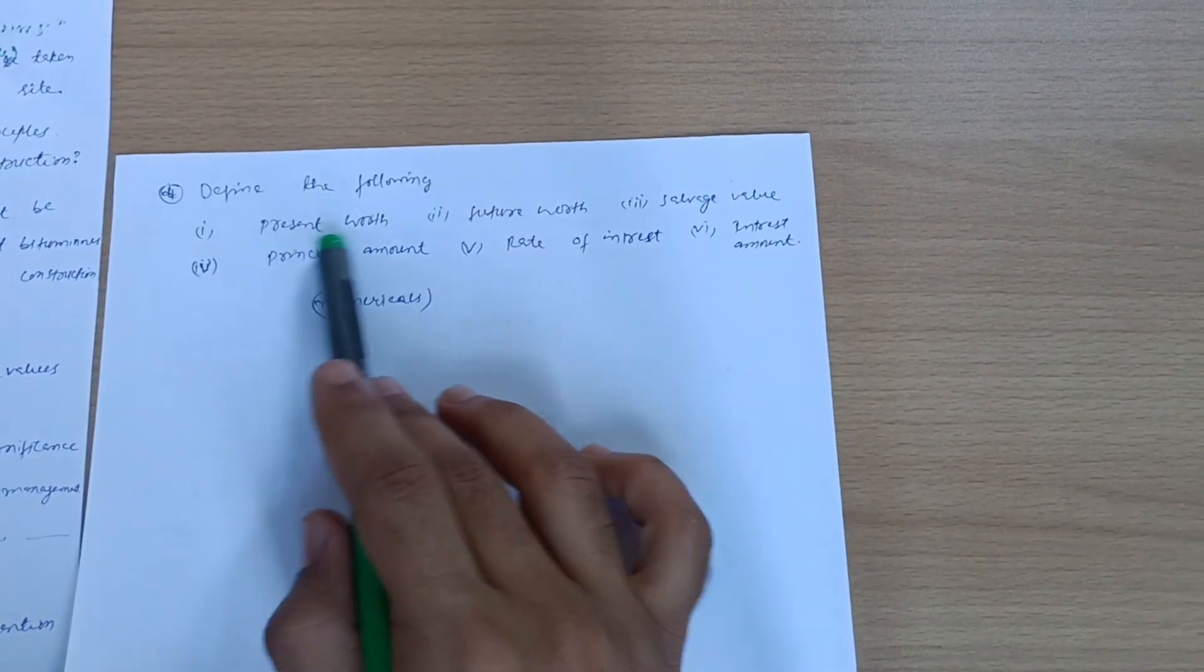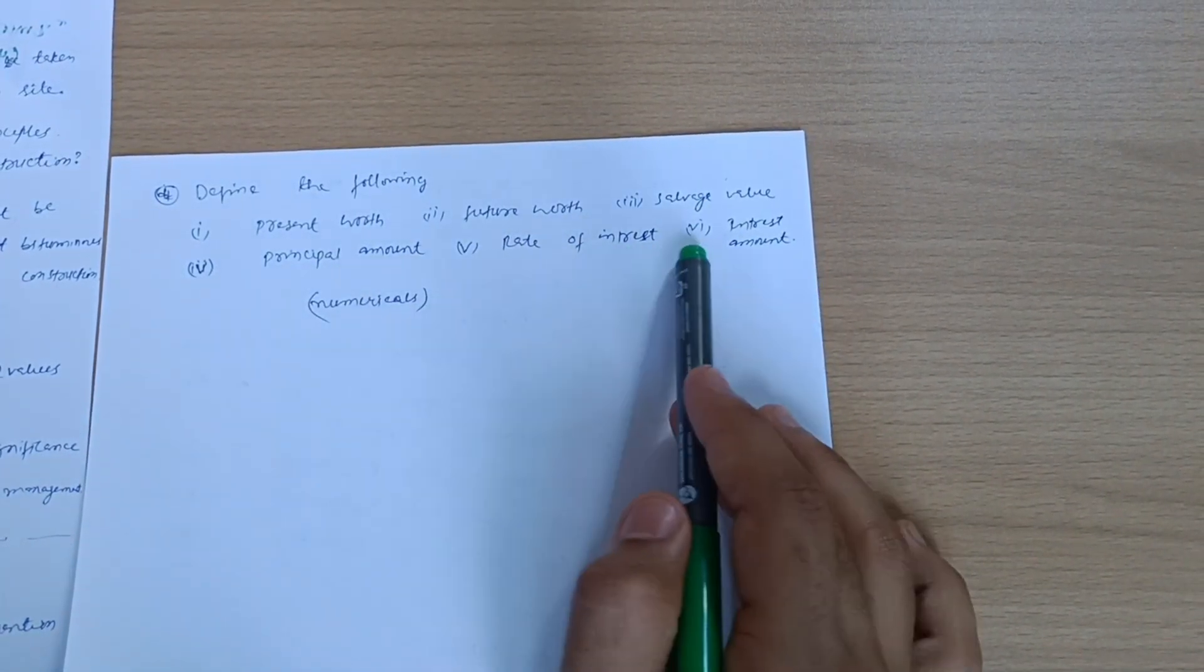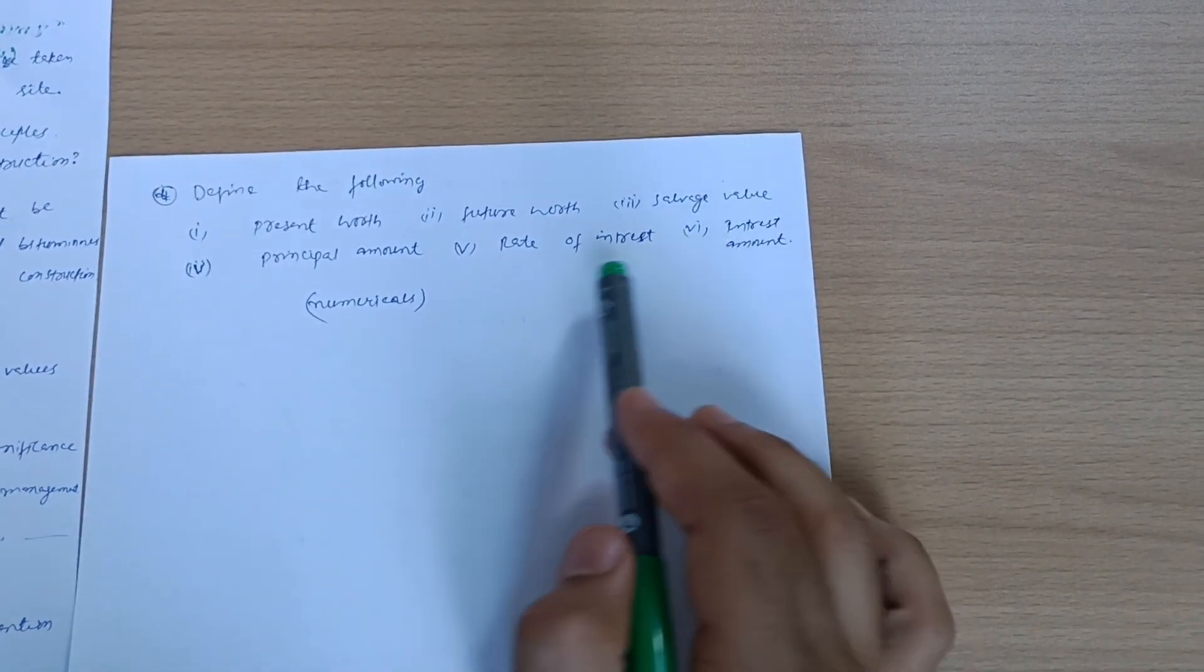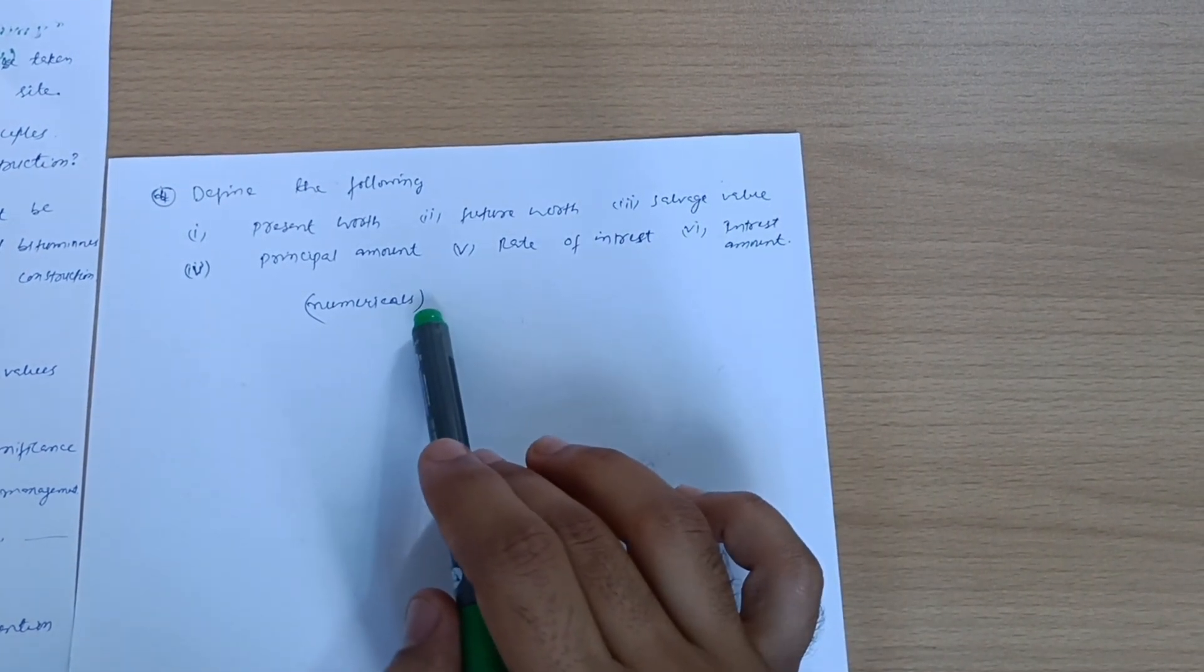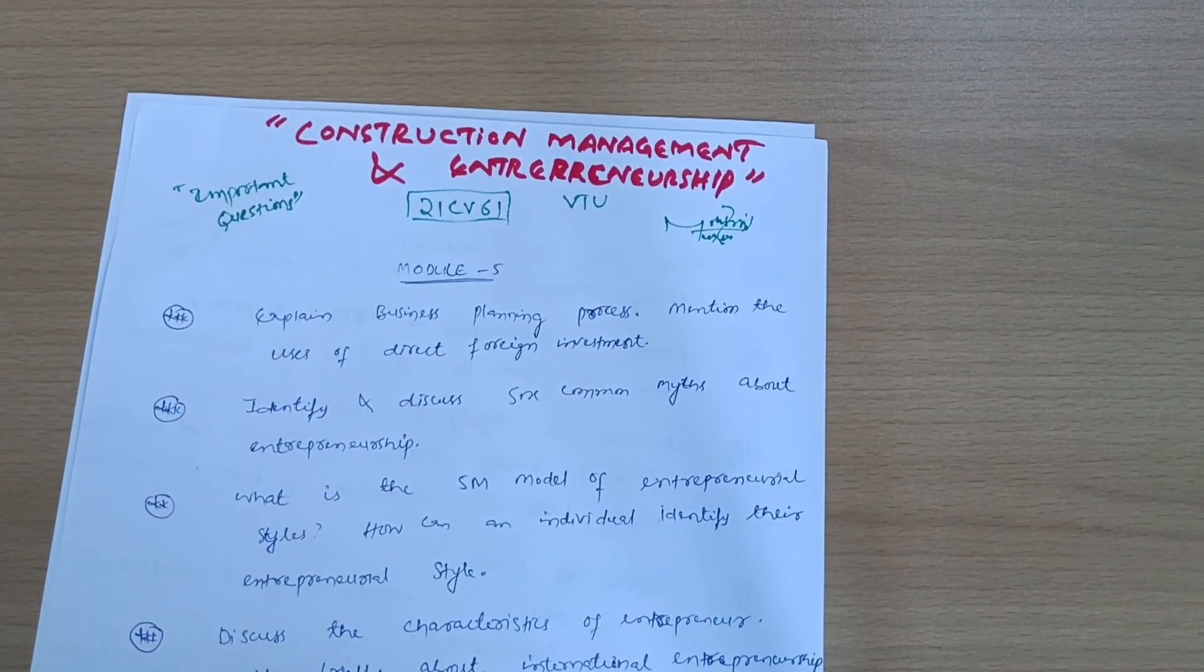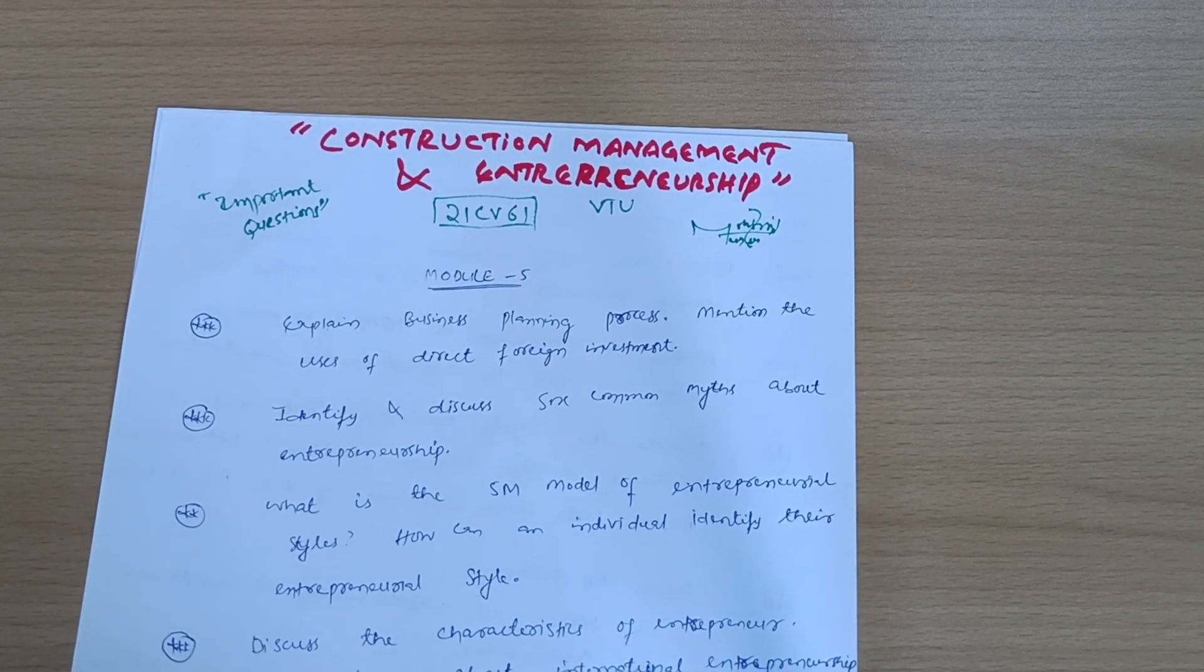Define the following: present worth, future worth, salvage value, principal amount, rate of interest, and interest. Among these are simple definitions which you can go through. For numericals, as I mentioned, refer to the papers. So this is all about the subject construction management and entrepreneurship. You can easily pass this with flying colors.